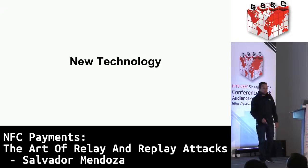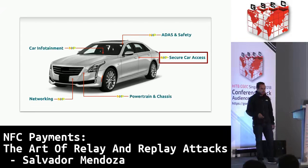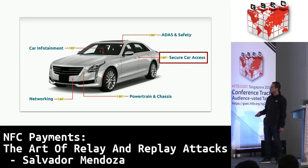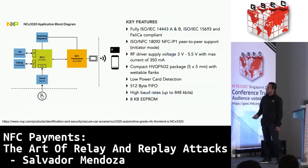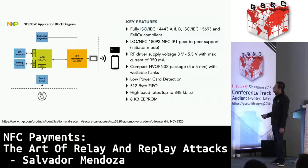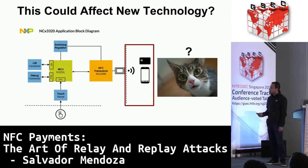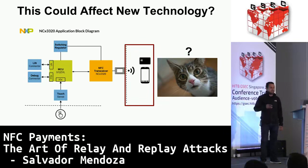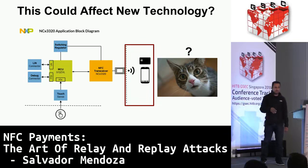In new technology, we have smart cards implementing NFC to interface with the cards and perform operations. We analyzed the 3020 board, which is in some cards - they are implementing NFC too. The question is whether this kind of technology is going to have the same kind of flaws. Even though we have some security measures inside the NFC protocol, like timestamp formats and similar protections, these are not implemented at all.